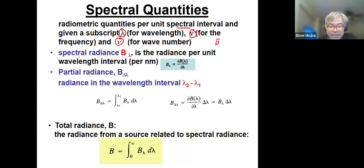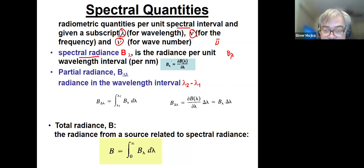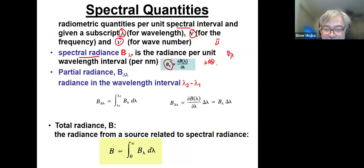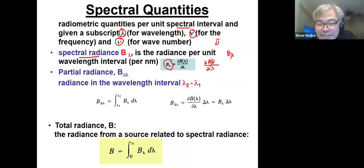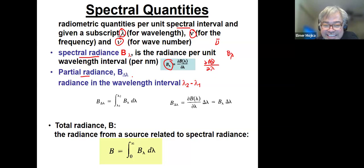If you're going to look at the spectral radiance — that has something to do with wavelength — that's the radiance per unit wavelength interval per nanometer. You can also have partial radiance — radiance in a wavelength interval — which is the difference between two wavelengths. And if you integrate them, you end up with total radiance.